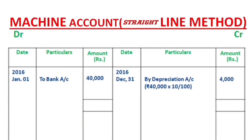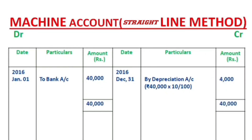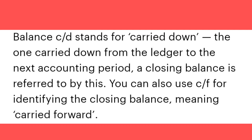For this year, the depreciation is Rs.4,000. The opening balance is Rs.40,000. On the credit side, we have depreciation of Rs.4,000. The closing balance carried down is Rs.36,000, that is Rs.40,000 minus Rs.4,000 equals Rs.36,000.